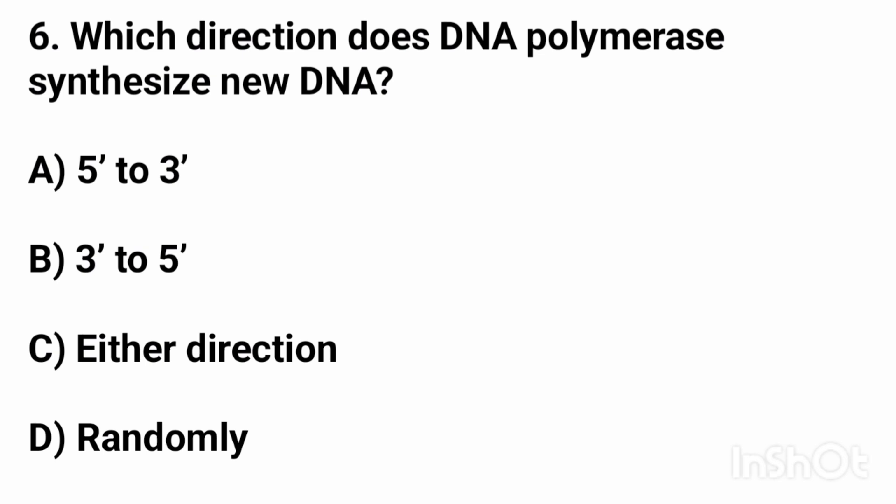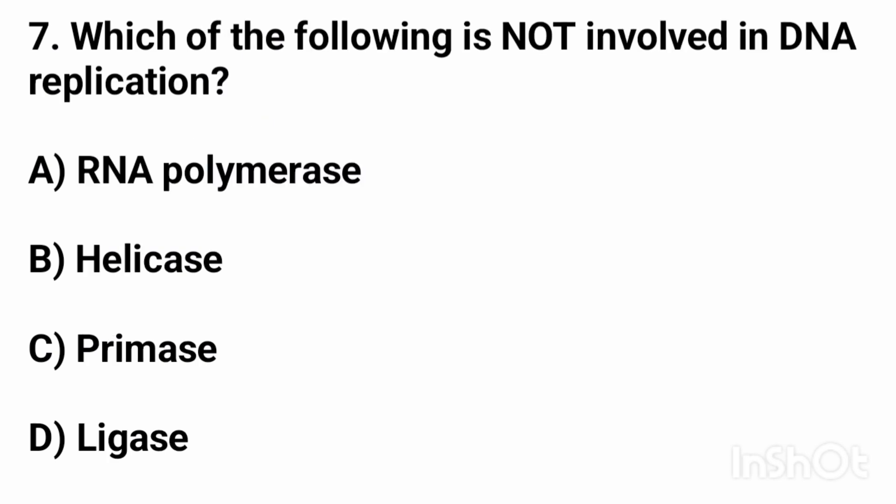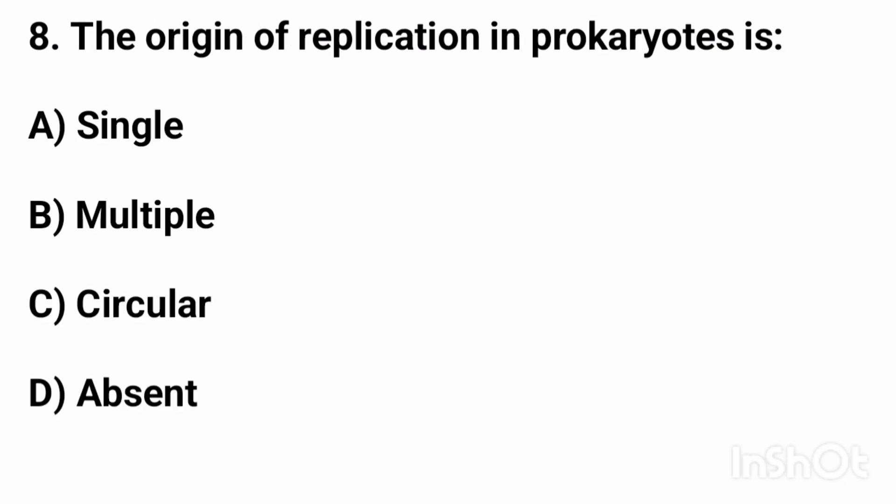Question number six: which direction does DNA polymerase synthesize new DNA? The right answer is option A, 5 prime to 3 prime. Question number seven: which of the following is not involved in DNA replication? The right answer is option A, RNA polymerase.